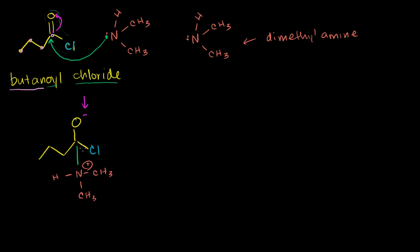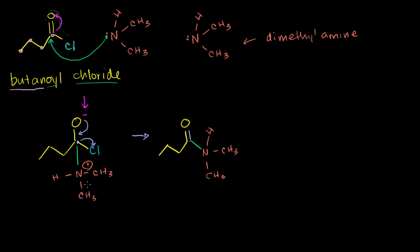Now, chlorine is fairly electronegative — it's a not-so-bad leaving group. It will want to take this electron from the central carbon. So you can imagine in the next step that this oxygen gives back an electron to reform the carbonyl group, at the exact same time that this chlorine takes an electron and forms a chloride anion. The molecule now looks like one, two, three, four carbons with a carbonyl group reformed, a bond to the nitrogen — which is bound to two methyl groups and a hydrogen with a positive charge — and the chloride anion has been bumped off with a negative charge.